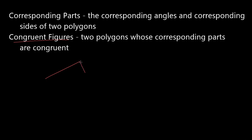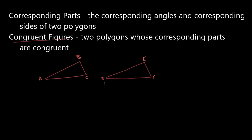Let's look at an example. I'm going to have a couple of triangles to work with — here's one, and I'm going to draw another one that is similar to it. I'll label both of them. This is triangle ABC and triangle DEF. Their corresponding parts would be angle A with angle D, angle B with angle E, and angle C with angle F.